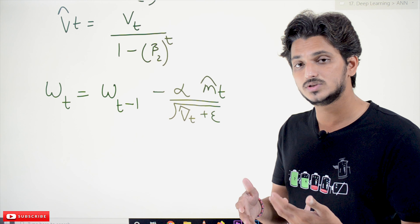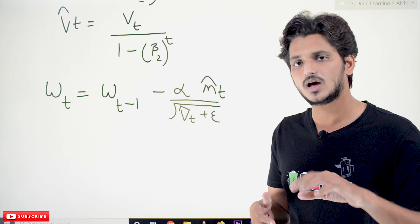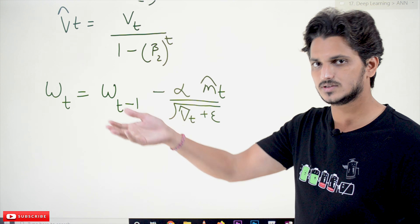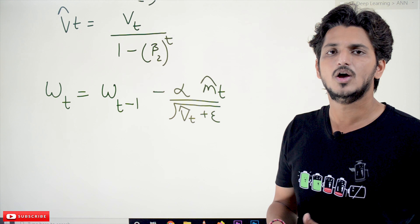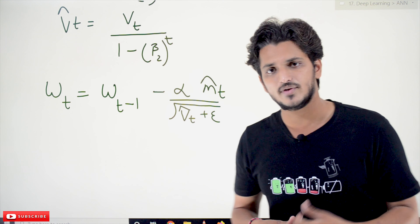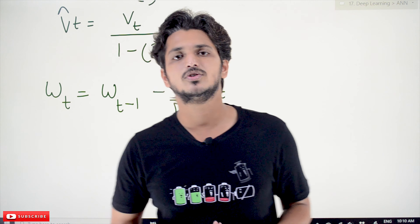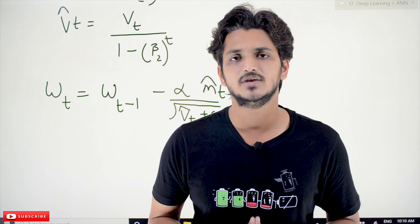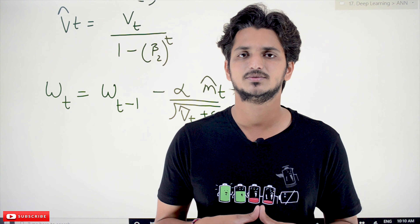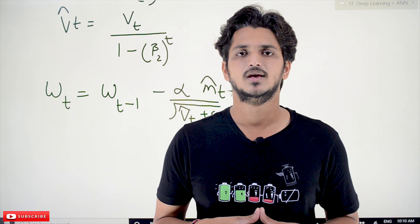So why are we using Stochastic Gradient Descent with Momentum and AdaDelta? These concepts are clearly discussed previously and we have refreshed them. Hope you understand the concept of Adam. If you have any questions regarding the concept, please post your questions in the comment section below. Thanks for watching. If you haven't subscribed to our channel, please subscribe and press the bell icon for the latest updates. Thank you.